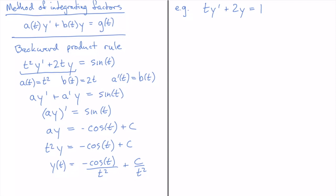If I multiply through by t, I get t²·y' + 2ty = t. The left-hand side of this equation is the same as the left-hand side of the previous example — now with t on the right-hand side instead of sin(t). So I can do the exact same procedure: go backwards through the product rule and solve for y. I'll leave that as an exercise. The important thing is figuring out the integrating factor — in this case, it was just t.